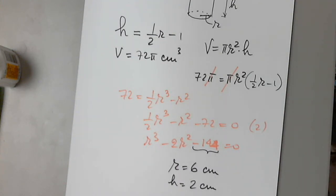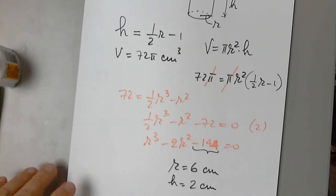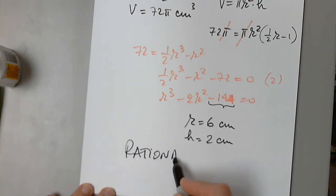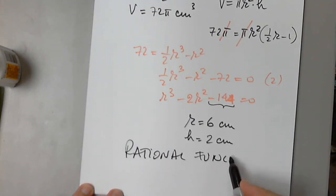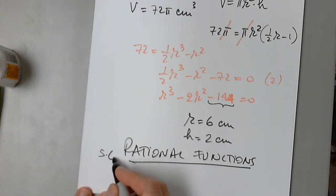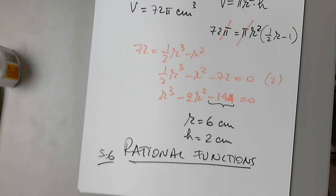Any questions? Okay, the final topic of this chapter is rational functions, and I think that this is section 5.6. We know how to graph polynomial functions of any degree now — odd, even, doesn't matter. We know how to graph a long list of basic functions, from linear to absolute value, square root, cube root.